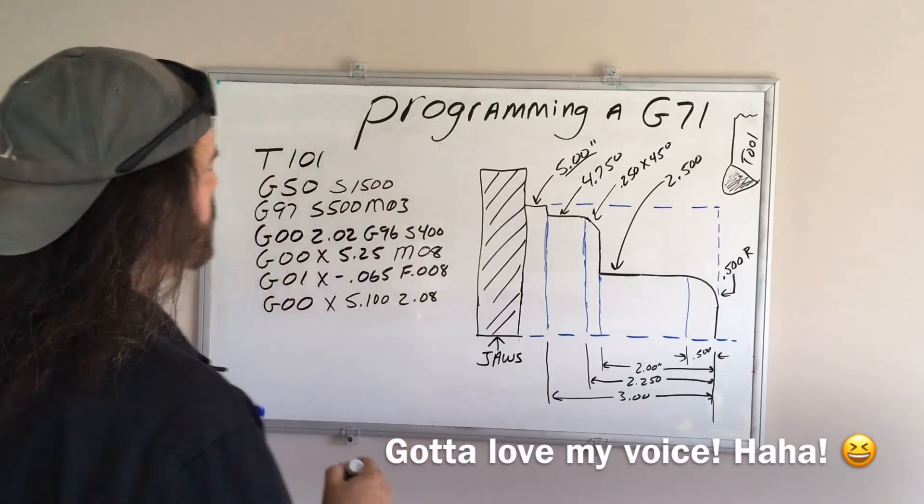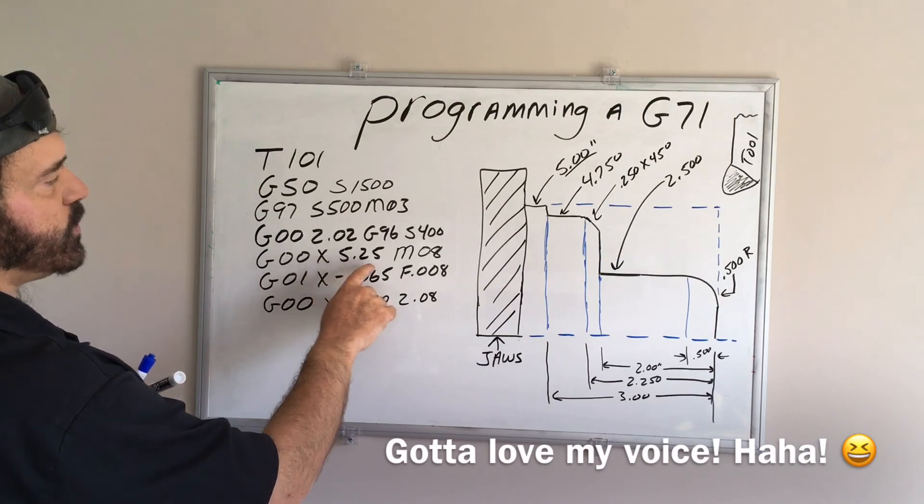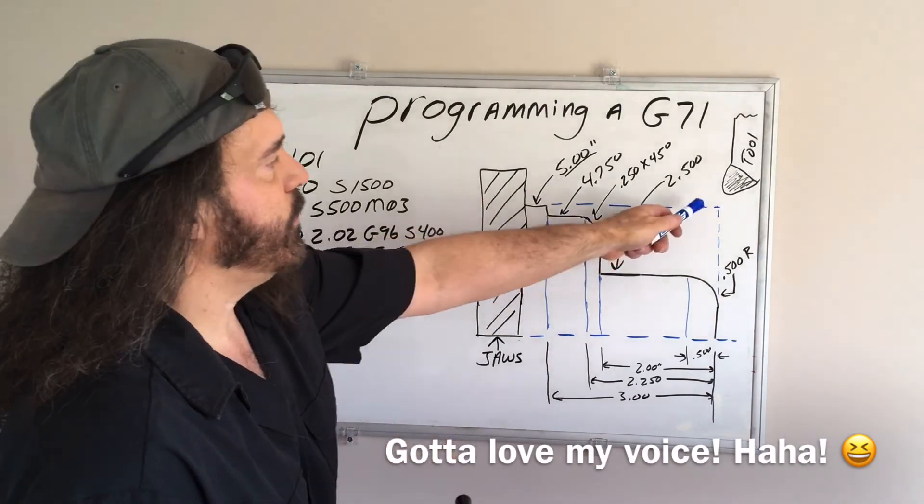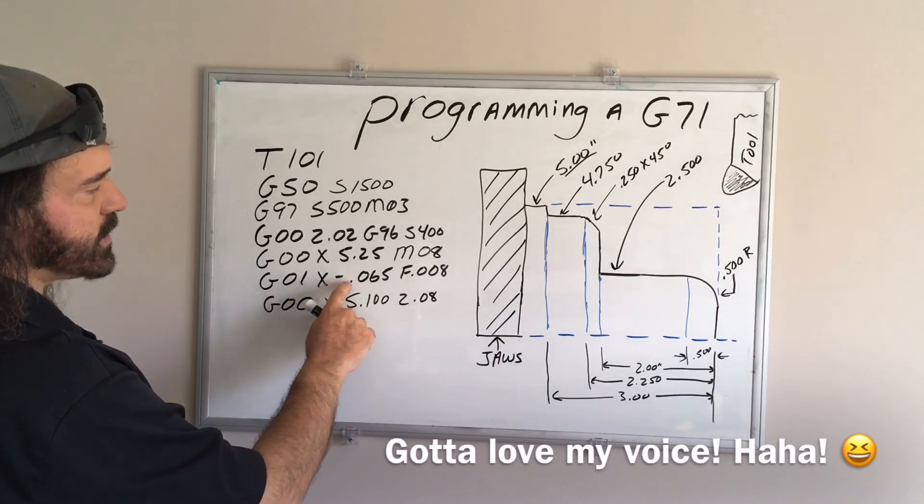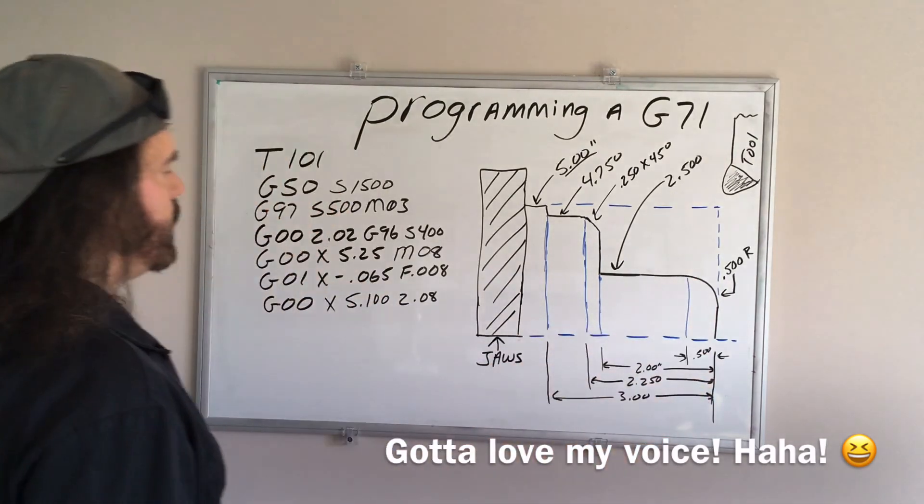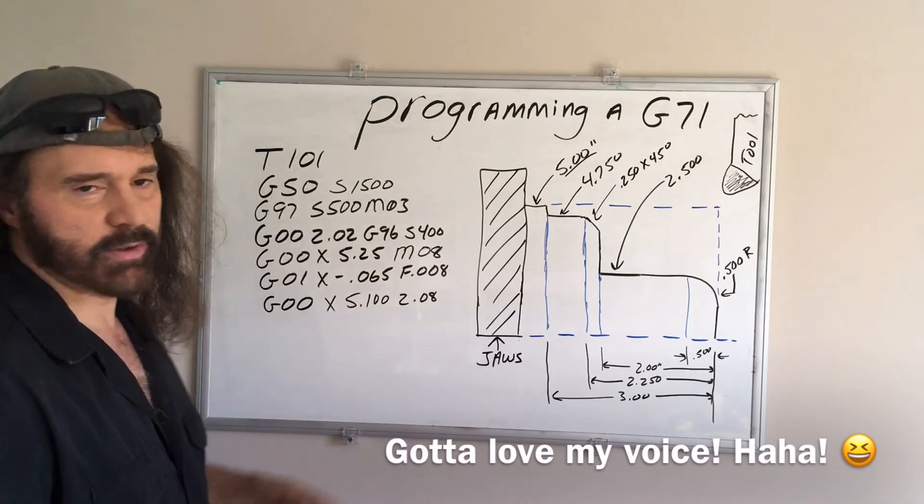So now, we're going to rapid down to x5.25, so we're 250 thousandths above the diameter of the part, turn on the coolant, and we're going to feed down to x-0.65, so we're going past centerline, and we're going to do 8 thousandths per revolution.